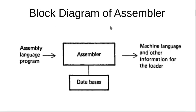The block diagram of assemblers can be shown as follows: there is an assembler which works using some databases. As input to the assembler, you send the assembly language program itself. The output from the assembler is a machine language and some other information that the loader will use while executing the program. This block diagram of the assembler is very important for us, along with the definition of an assembler.